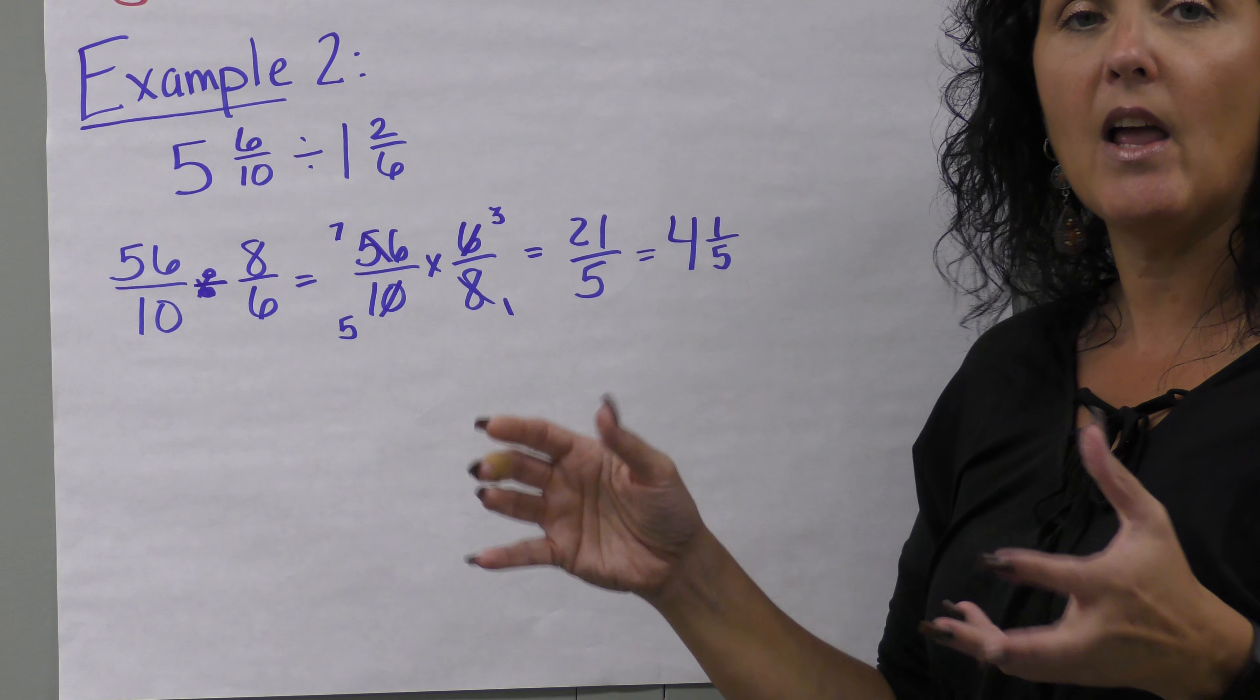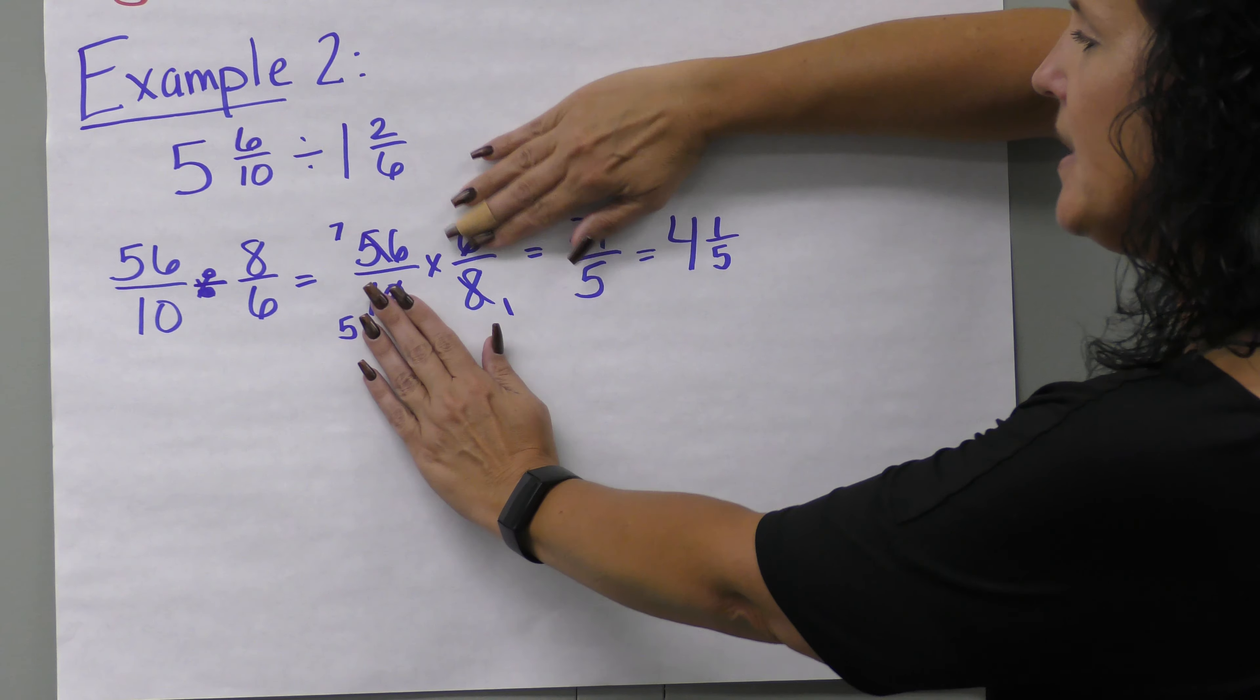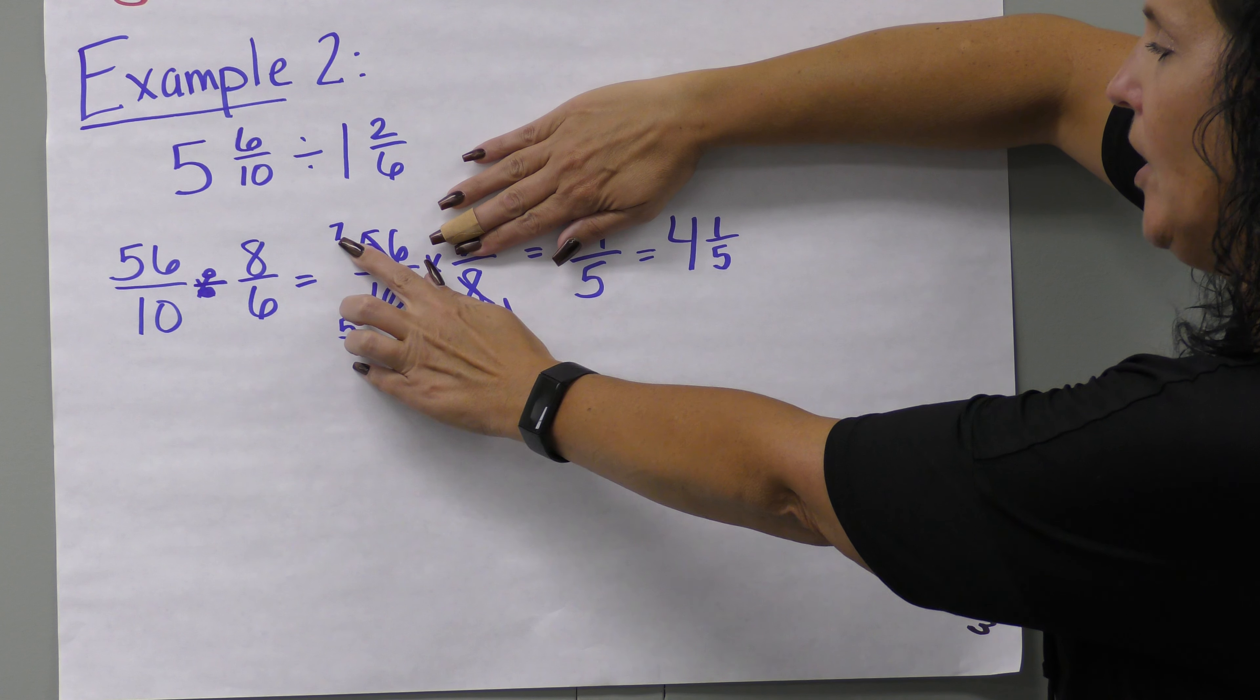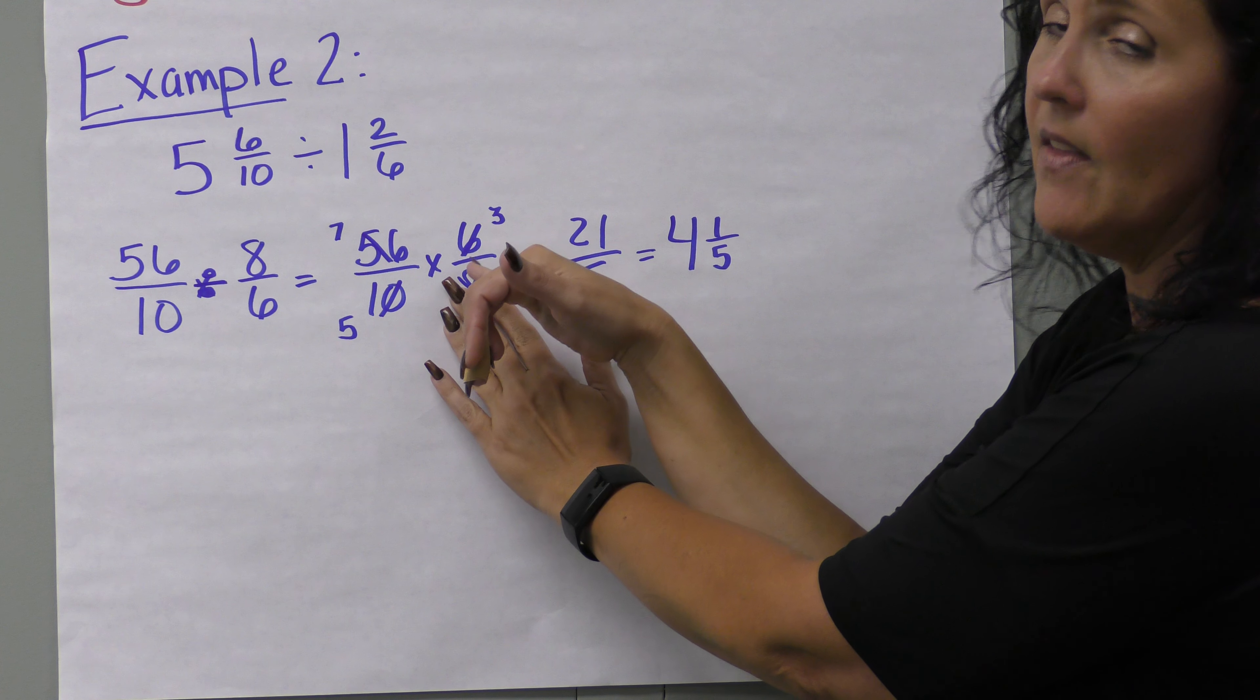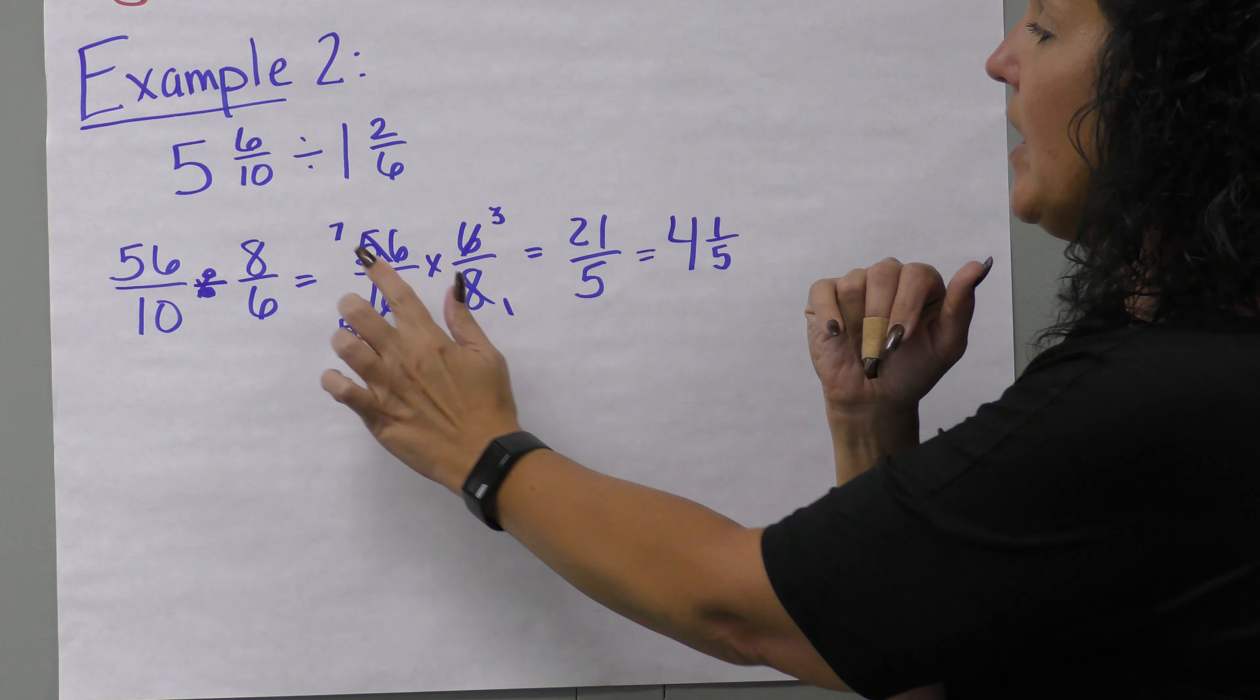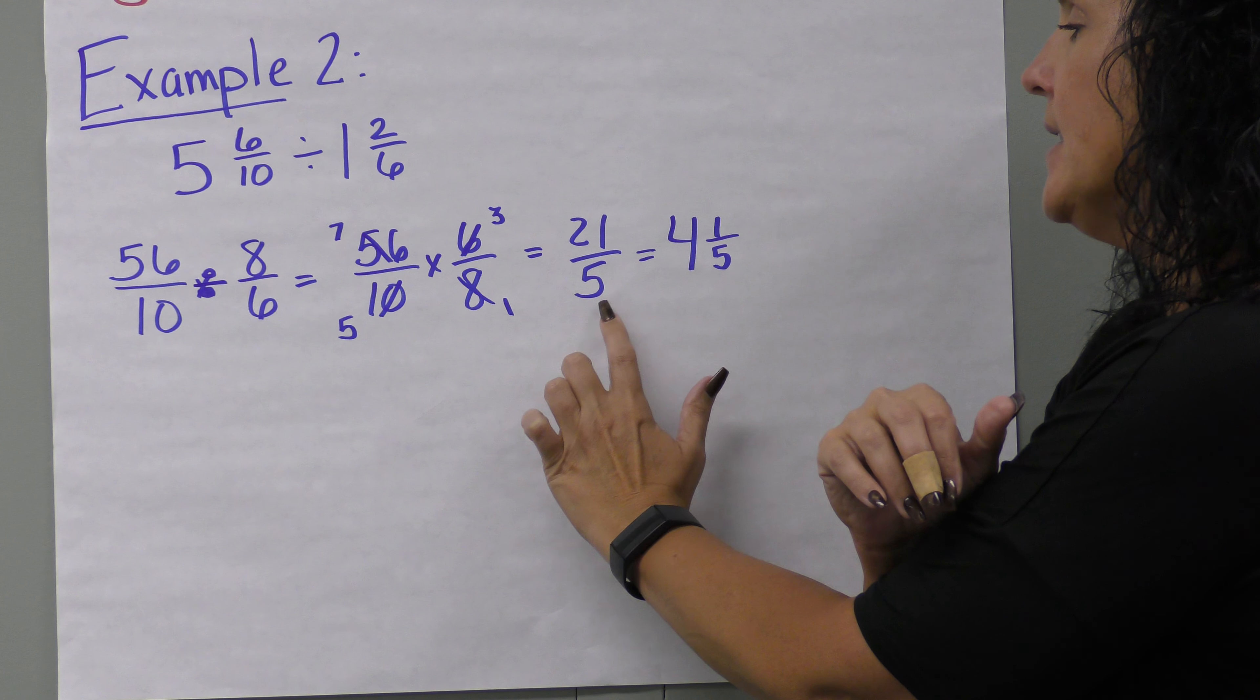Cross simplify so we're not multiplying large numbers. Eight goes into fifty-six seven times, so we have seven instead of fifty-six and one instead of eight. Then ten and six can both be divided by two: two goes into six three times, two goes into ten five times.